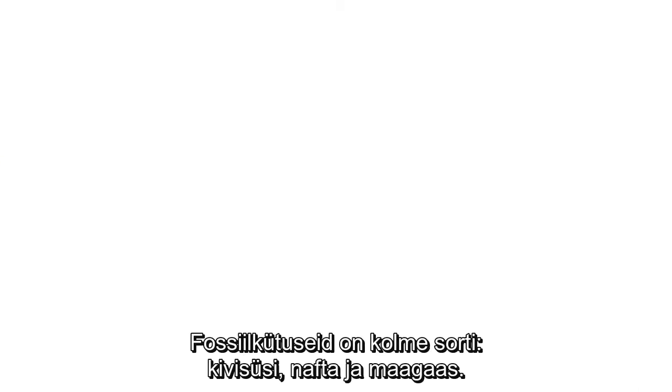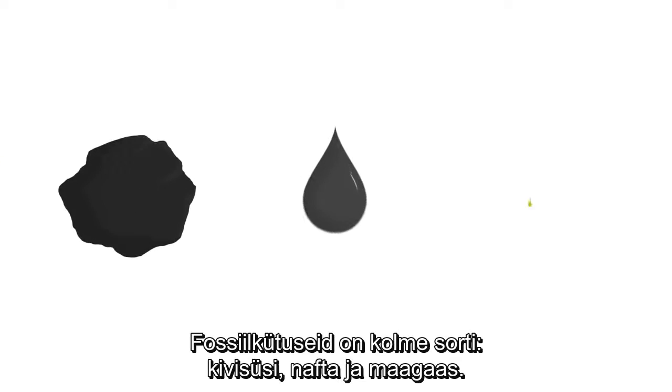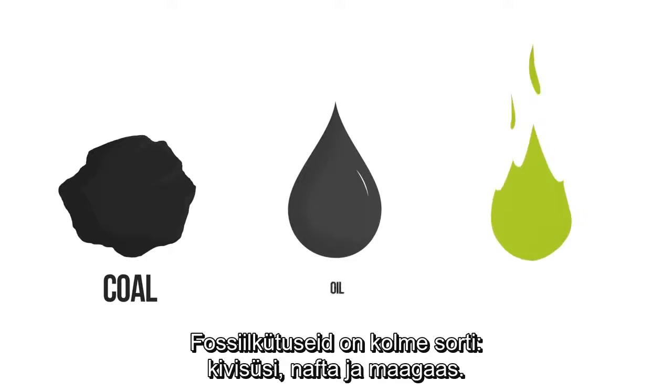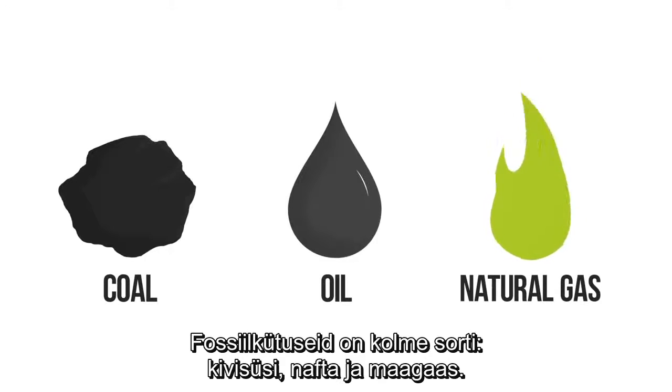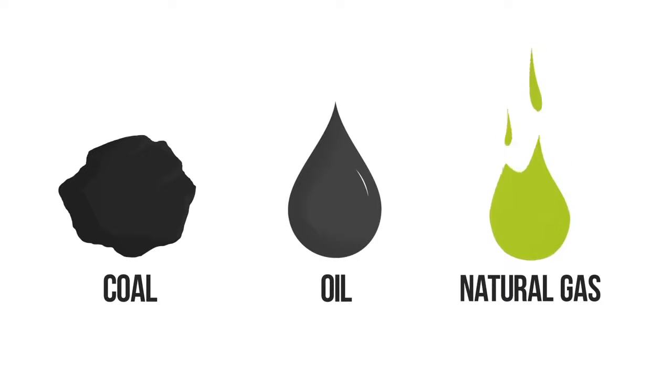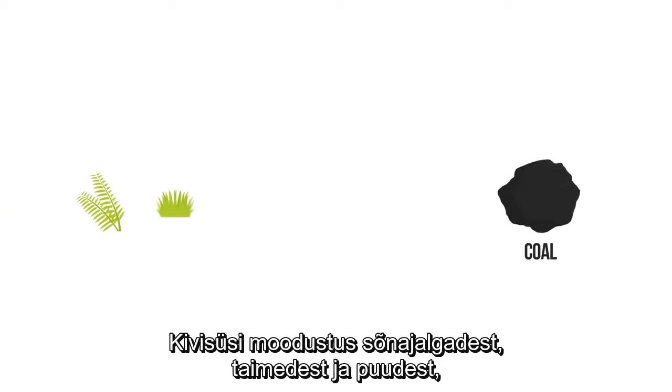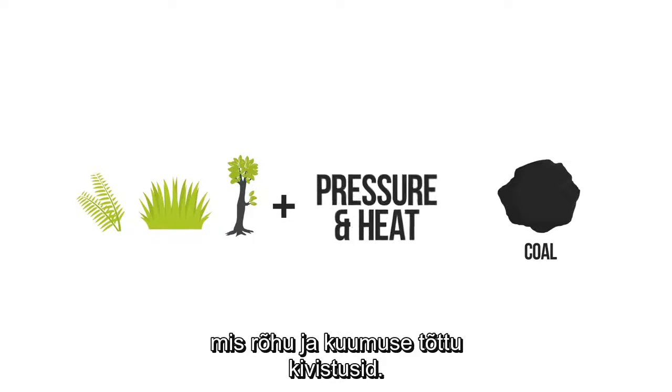There are three major types of fossil fuels: coal, oil, and natural gas. Coal was formed from ferns, plants, and trees, which hardened due to pressure and heat.